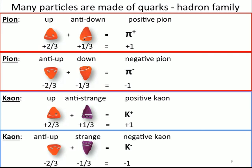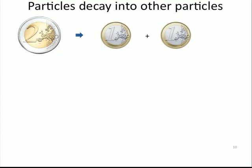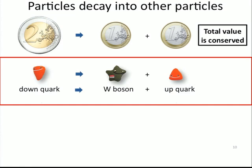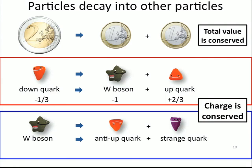All these particles can decay. A particle that is heavy and unstable breaks apart. It's like making small change for a large coin - you start with a two-euro coin and break it into two one-euro pieces. The total value must be conserved. With particles, you can start with a down quark and it can emit a W boson and an up quark. The down quark has charge minus one-third, the W boson has minus one charge, and the up quark plus two-thirds. The charge is conserved. The W boson can decay into an anti-up and a strange quark. That's how we can obtain strange quarks from regular matter. This completes my first introduction about particles.